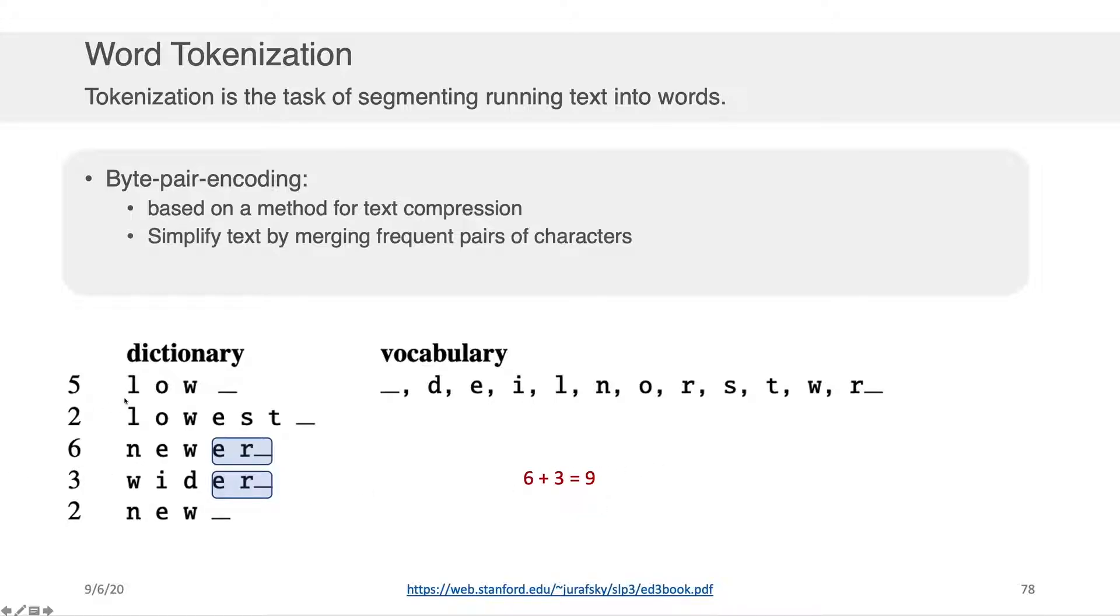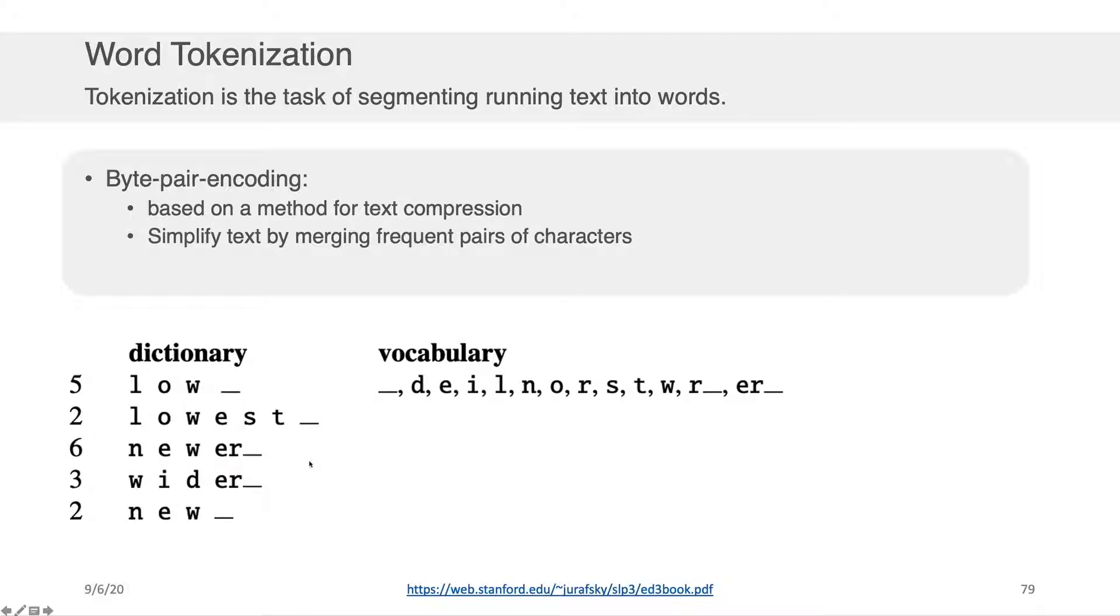And if we went and we did the same kind of pairwise calculations again with l and o, o and w, w and underscore, we would find that again, this one has the highest co-occurrence. So once again, we would join them. And what we would add here to the vocabulary is a brand new symbol, e r underscore. And we're going to treat that as though it's like one character. Okay, so we can keep doing this over and over again, right?